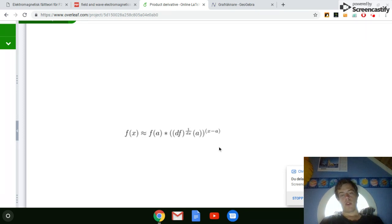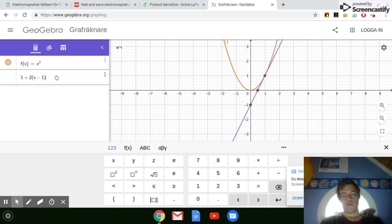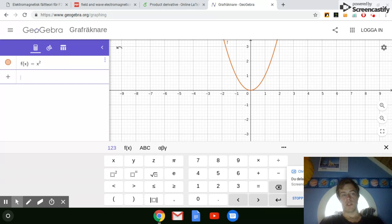And if we look at what this approximation will look like, we can still use this function x squared, and we can still do it around x equals one. So the value of the function is still going to be one, but instead of adding, we are going to multiply. So we can just get rid of this one, because one is the multiplicative identity.